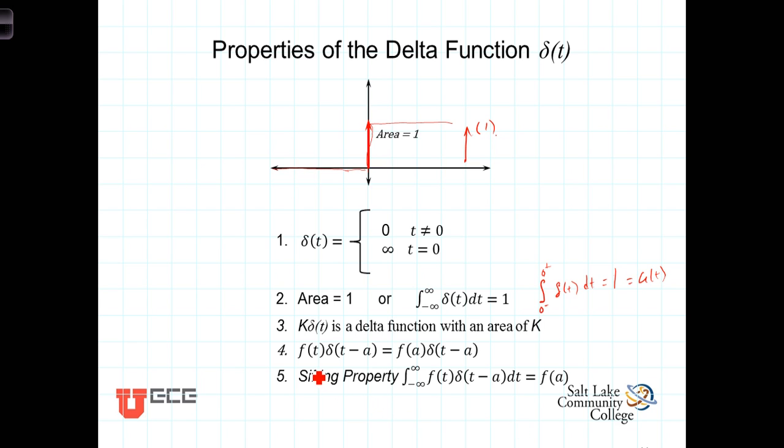Now, because the delta function, in this case, we're talking about delta of t minus a, is a delta function out here at t equaling a, if this is zero, it only exists at t equals a.